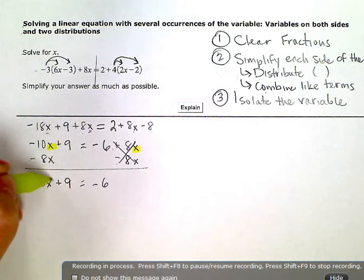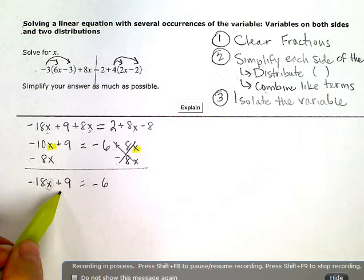I need to start getting that x by itself. Before I do anything with the coefficient, the number attached directly to the x, I want to get rid of any other terms that are over here on the left side. So I want to zero out this plus nine.